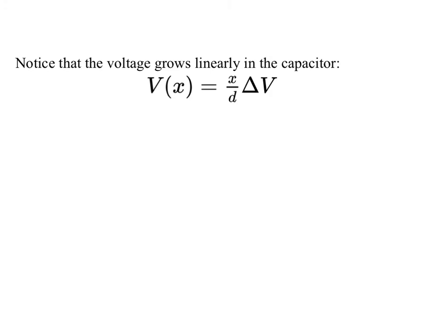Notice that the voltage grows linearly in the capacitor. This is an important feature of capacitors. It's not a general statement, but since capacitors are both ubiquitous and useful, it's worth knowing that the potential at any point is based on the total potential difference and the fraction of the distance you've covered. If you go three quarters of the way away from the negative plate, you pick up three quarters of the total potential. As you can imagine, that's also a useful thing.